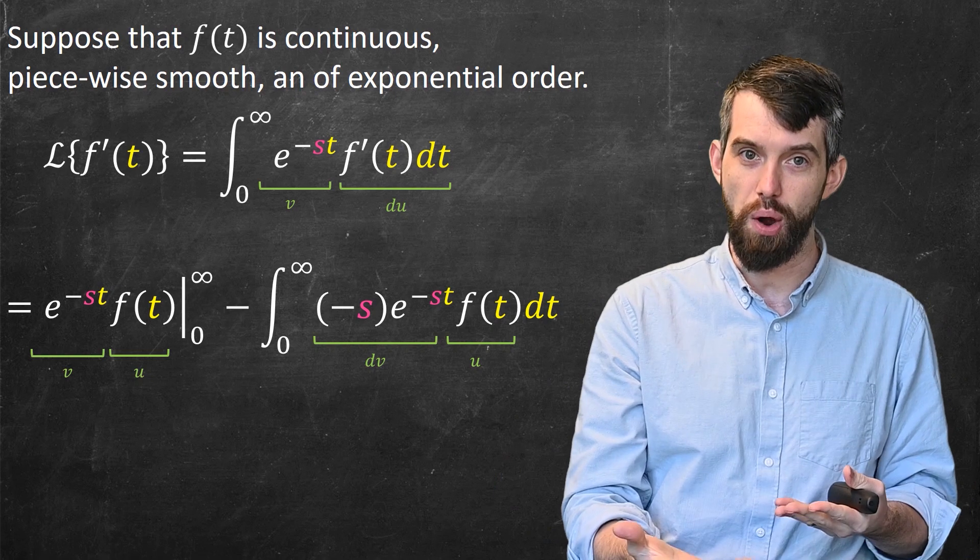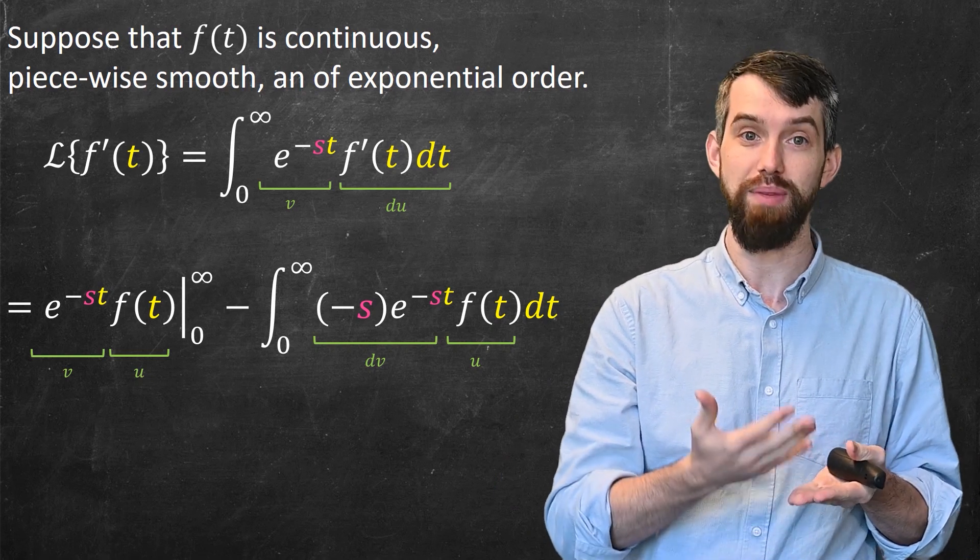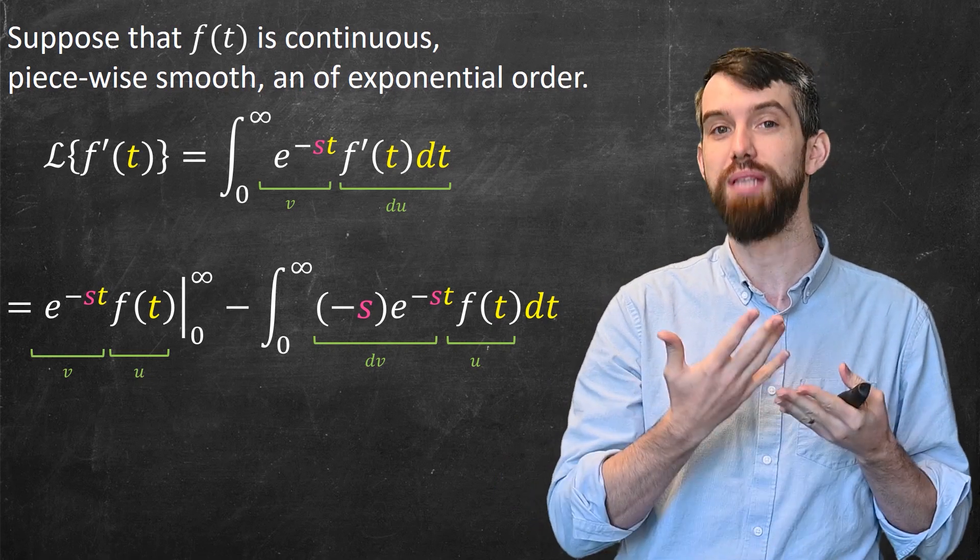When you plug in 0, then you're going to get e^0, which is just 1, times f(0).